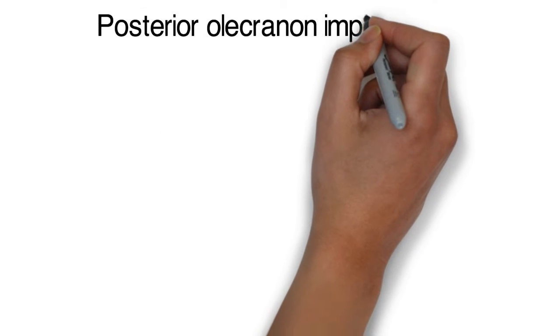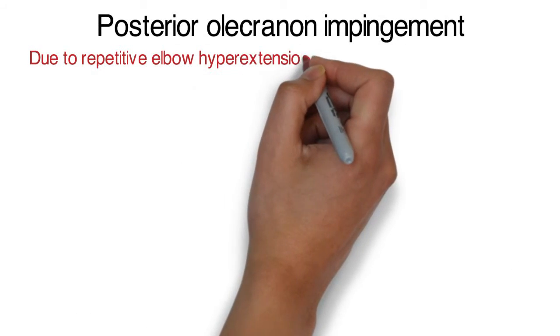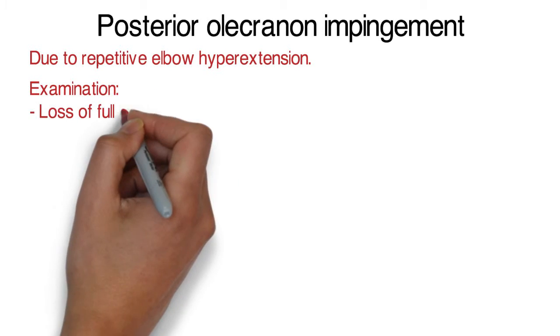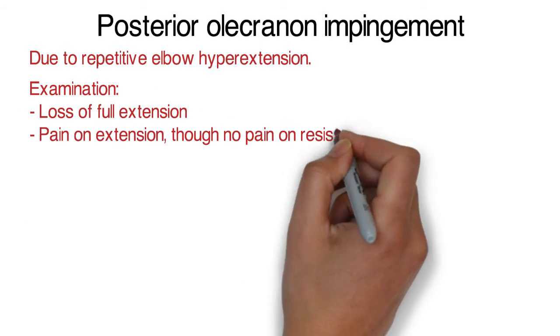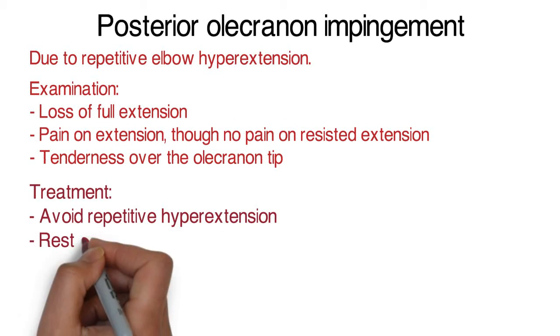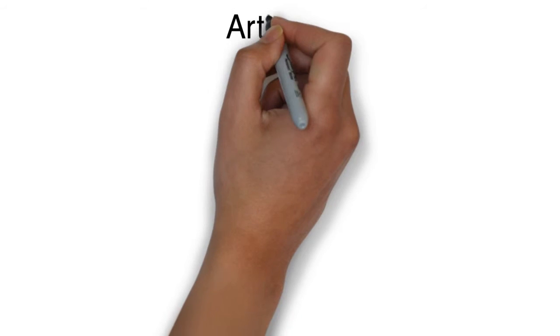Posterior olecranon impingement occurs due to repetitive elbow hyperextension. On examination, you will find loss of full extension, pain on extension and tenderness over the olecranon tip. Treatment is to avoid hyperextension and use conservative and medical measures. Surgery is a last resort.